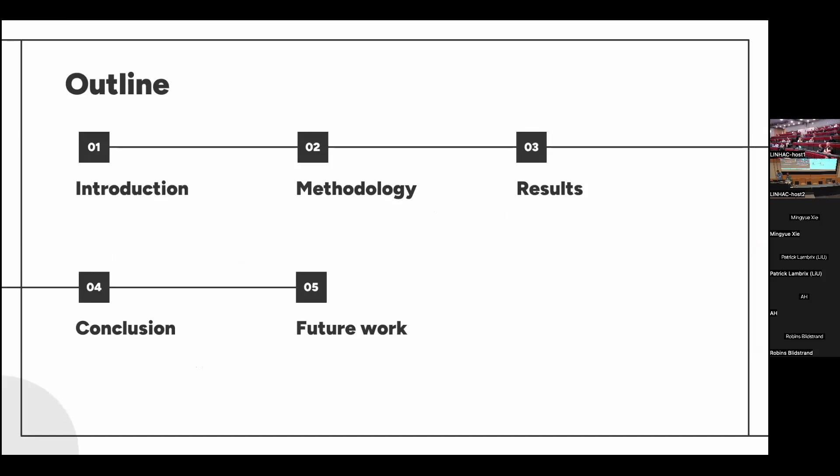Here's an outline of our presentation. We will start with an introduction that gives you an overview of our topic. Then we will move on to a methodology section, where we explain our research methods, focusing on how we represent player styles and how we will derive the player types. Next, we will present our key results, followed by a conclusion, and lastly some suggestions for future work.